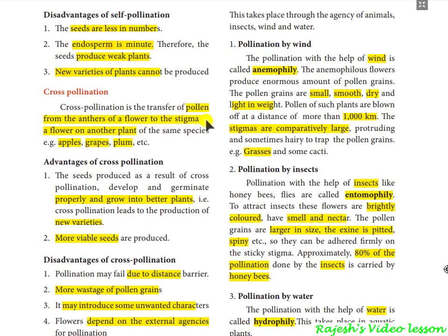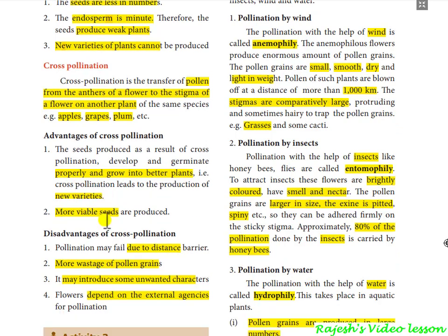Cross-pollination is the transfer of pollen from the anther of a flower to the stigma of a flower on another plant. Two different plants are involved in the reproduction phase, so it is called cross-pollination. Advantages: it always produces hybrids — new varieties are always forming — and it produces more viable seeds.